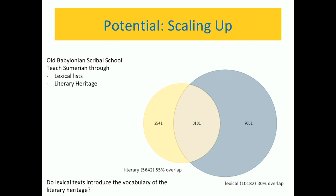What we can also do today is zoom in on one particular literary or lexical text and ask where this overlap takes place — in particular, are there literary texts more strongly marked by lexical vocabulary, or others with a vocabulary entirely removed from it? I haven't made that step yet, so I cannot show that to you, but we can do it with the same data set and the same approach.